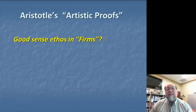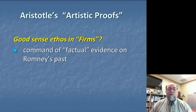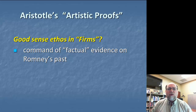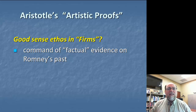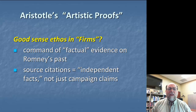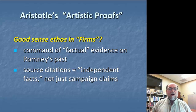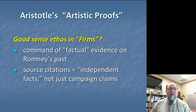What sort of good sense ethos appeals did you find in the Firms ad? The ad demonstrates a command of factual evidence on Romney's past. The examples about how he, through his business, eliminated jobs and sheltered his tax money come from cited, documented sources of information on each of those text boxes. Presumably, this isn't information the campaign's just making up — this is information that's been confirmed by other sources. So not only does this provide sound evidence for the argument, but it also demonstrates that Obama and his campaign have a good sense of what's going on factually in the background of this candidate.